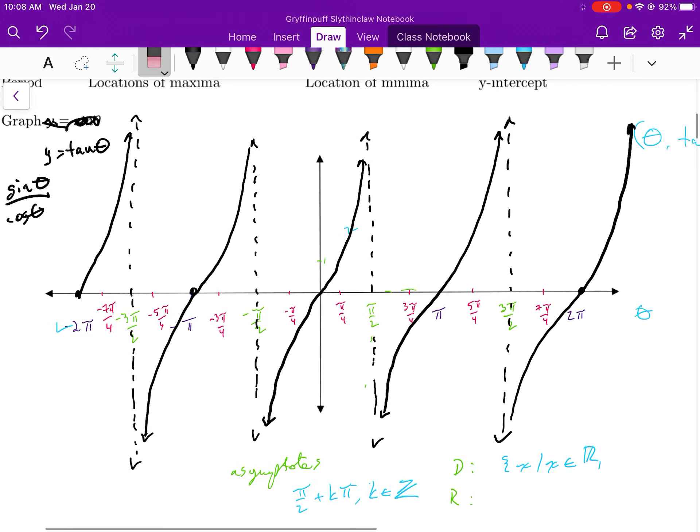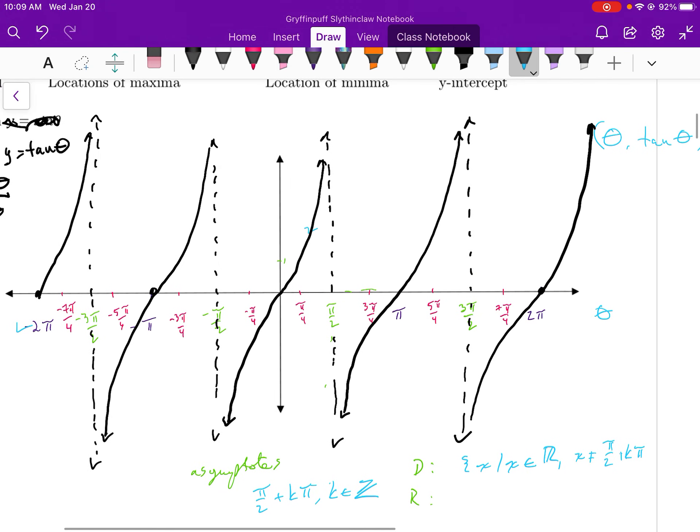x exists such that x is an element of the reals. However, x—now it's going to get a little bit complicated—well, x can be anything except x cannot be where your asymptotes are.